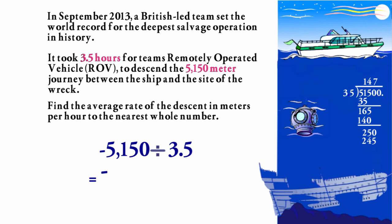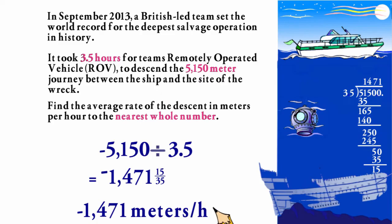35 goes into 250 seven times. Subtract. So our answer is negative 1,471 and 15 35ths. Since 15 35ths is less than a half, we should round the final answer to negative 1,471 meters per hour.